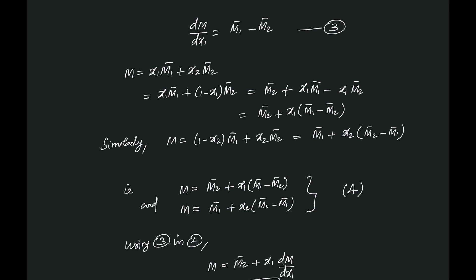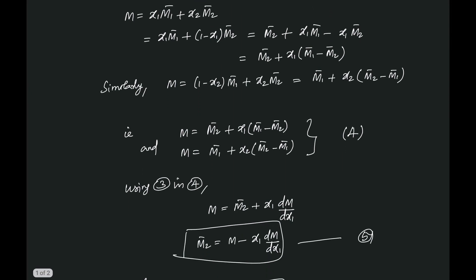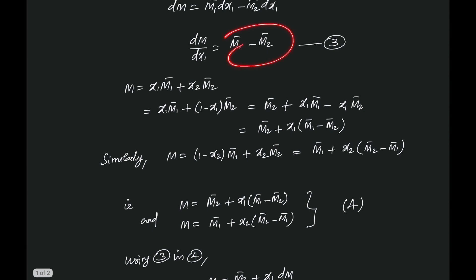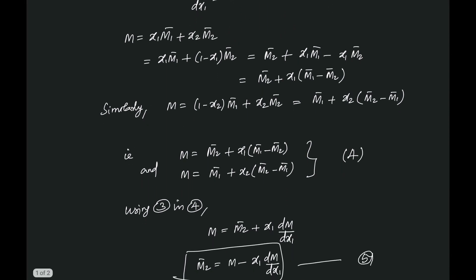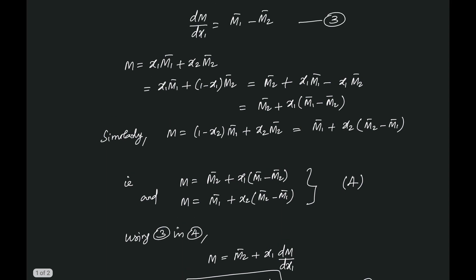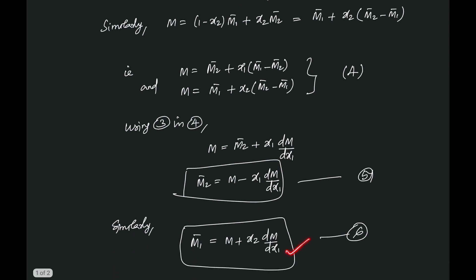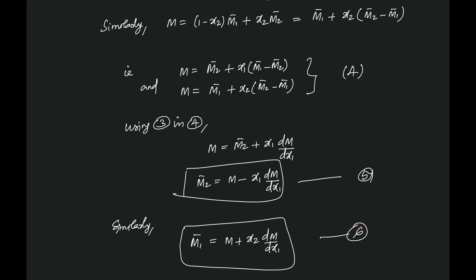One expression is available in terms of x₁ and another in terms of x₂. Using these together with the expression for dm/dx₁, we obtain the final expressions for m̄₂ and m̄₁ simply in terms of m, its derivative dm/dx₁, and composition variables. Now we have the equations comfortably available.